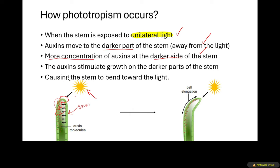Remember that the main function of auxins is to promote or inhibit growth. In the stem, auxins stimulate growth. Because there will be more auxins at the darker side of the stem, they will make that darker part of the stem grow longer and bigger. So imagine that if there is more growth at the darker side than at the lighter side — the lighter side no longer has auxins.